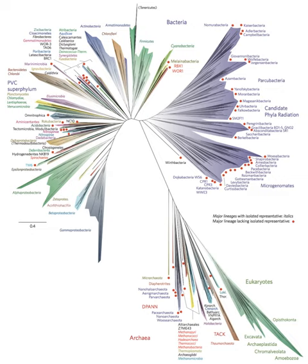Ernst Haeckel constructed several trees of life. His first sketch of his famous tree of life shows Pithecanthropus alalus as the ancestor of Homo sapiens.